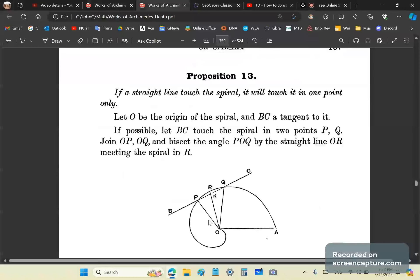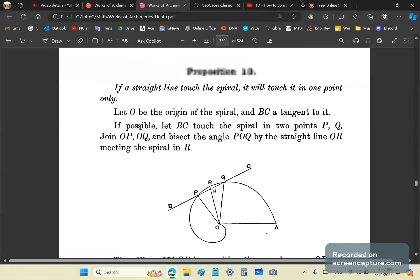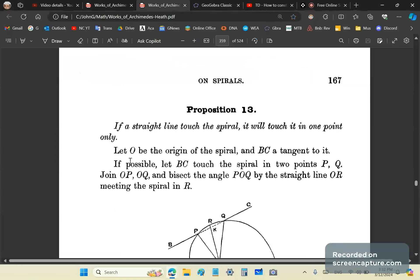If the ancient Greeks interpreted tangent line as anything else besides the way they did, you wouldn't have had calculus or mathematics today. A line is tangent to a curve if and only if at least one or more parallel chords can be constructed. If you look at this diagram here, if you construct any parallel chord to the tangent line BC, then it means that this line is a tangent line. That's how Archimedes proved this proposition. He says if a straight line touches a spiral, it'll touch it in one point only.